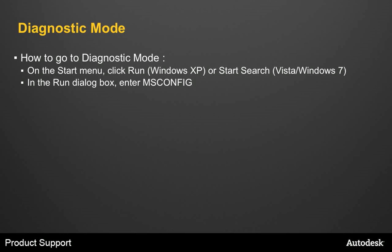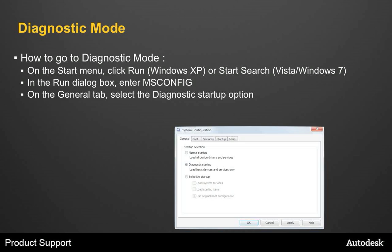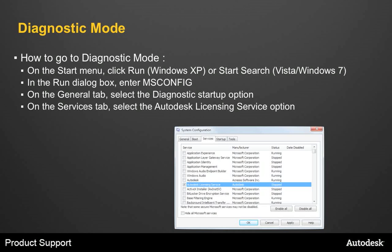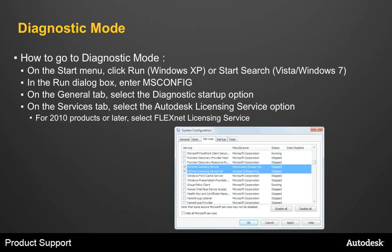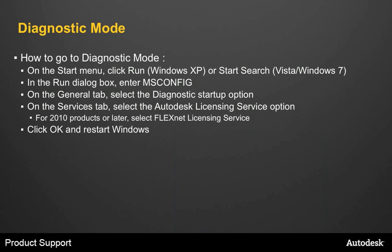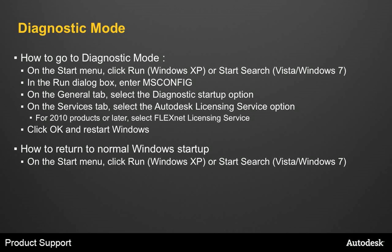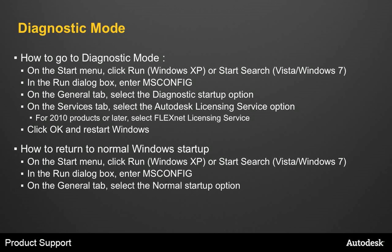This will launch the System Configuration utility. On the General tab, select the Diagnostic Startup option, then go to the Services tab and select the Autodesk Licensing Service option. For 2010 products or later, you also want to select the FlexNet Licensing Service. Then click OK and restart Windows into diagnostic mode. To get back to a normal Windows startup, go through the same process of launching msconfig, and on the General tab select the Normal Startup option. Then click OK and restart Windows and it'll bring Windows back into its normal startup mode.